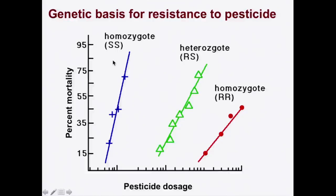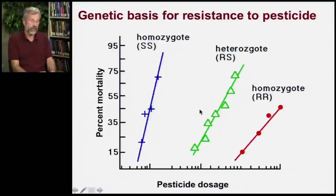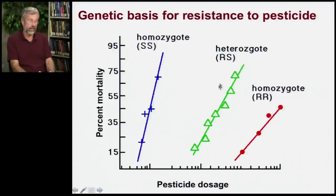But now you've gotten rid of that susceptibility allele as much as you could. There always happens to be, within a population, some other variant — it may be rare initially, but it is resistant to a pesticide or an antibiotic. In this case, there would have already been a few individual insects in the population carrying one copy of the resistance allele.